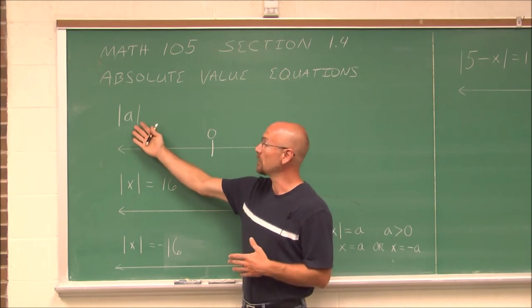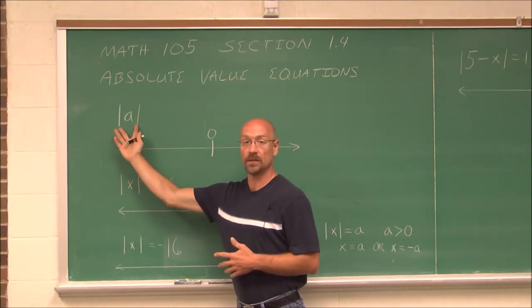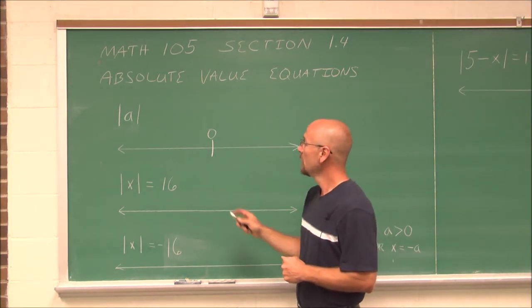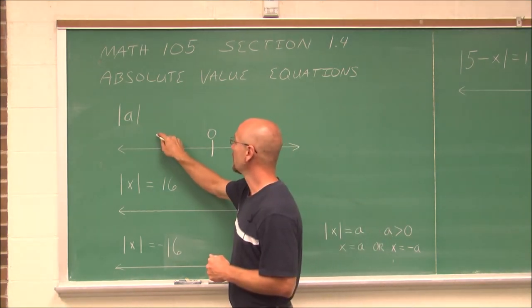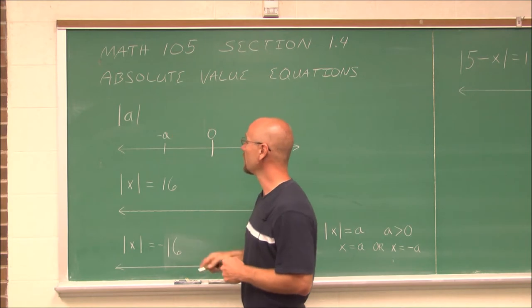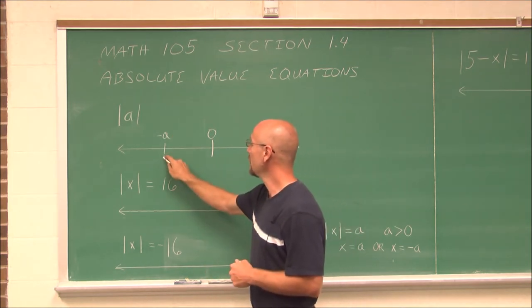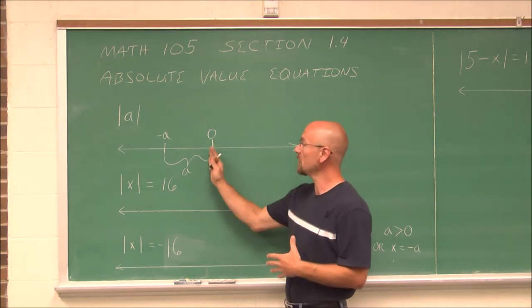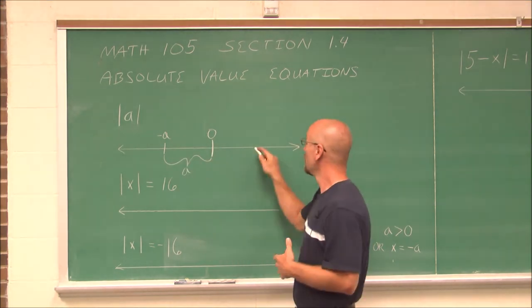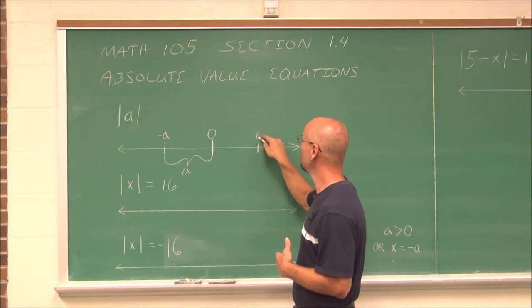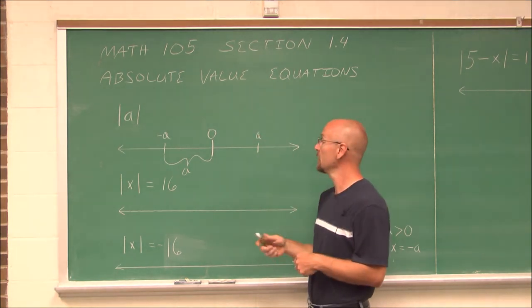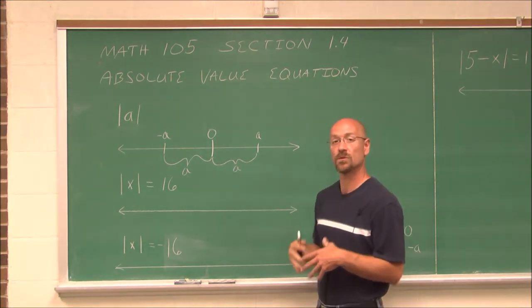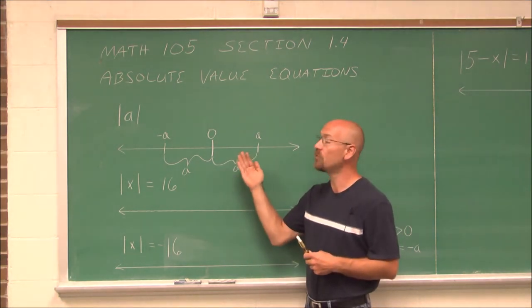For this example here, the absolute value of a — these symbols indicate absolute value. They're a special type of grouping symbol. So if a is a negative value to the left of 0, it is a units away, which is a positive value because we're asking a distance. But if a is a positive number over here, it is still a units from 0. So it's asking a distance — how far from 0.